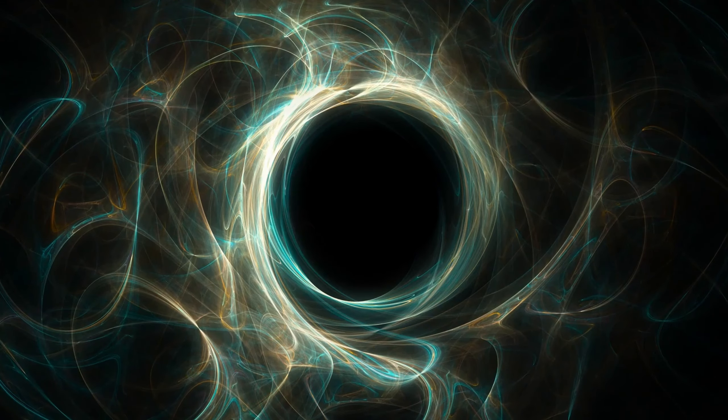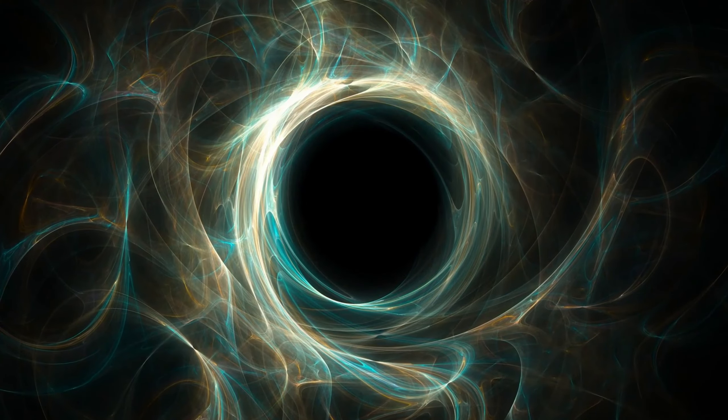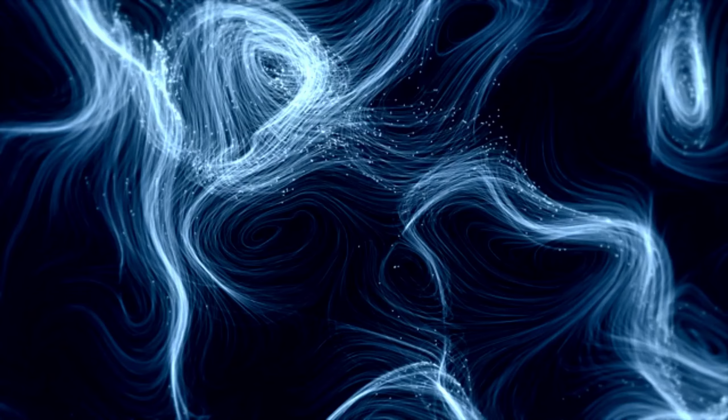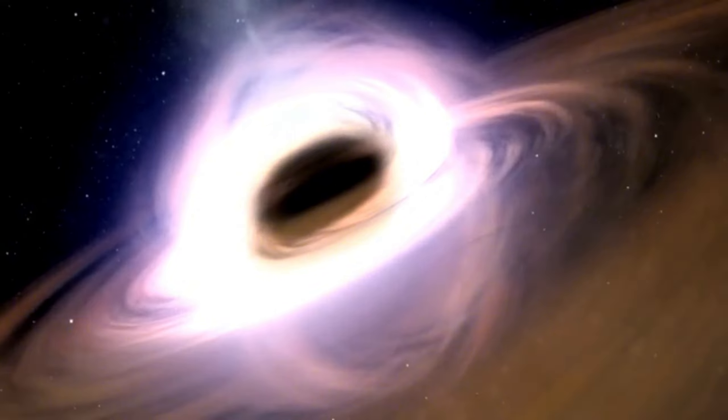Very large black holes exist at the extreme end of the spectrum. They are millions, if not billions, of times greater than the sun. These live at the centers of large galaxies, including our own Milky Way. They appear like a massive dead space, pulling everything toward them.